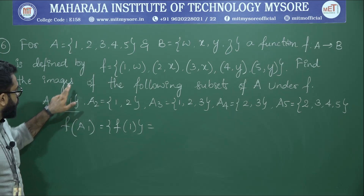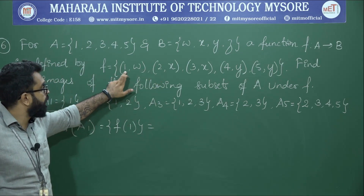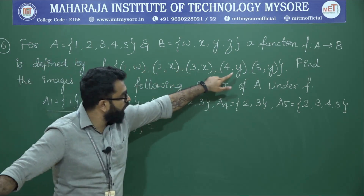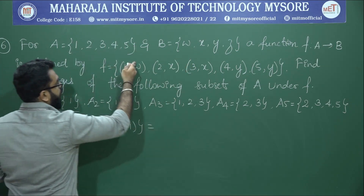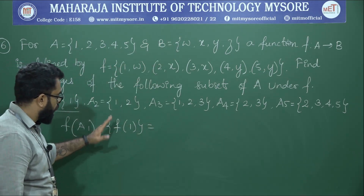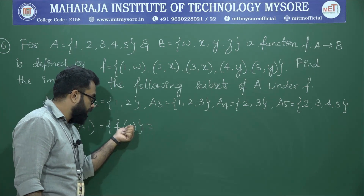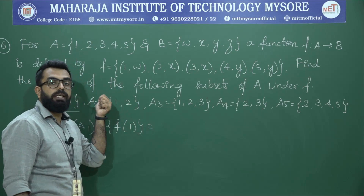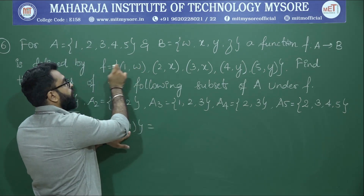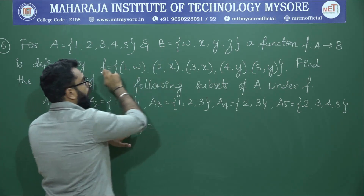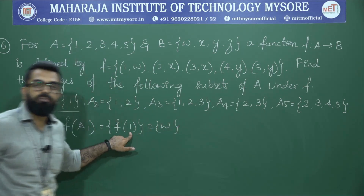Observe the ordered pairs: 1, 2, 3, 4, 5 are the first components, which are elements of set A, and w, x, x, y, y are the second components, which are elements of set B. Under the function f from A to B, element 1 is mapped to w — so the image of 1 is w.